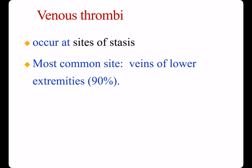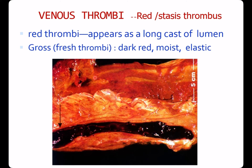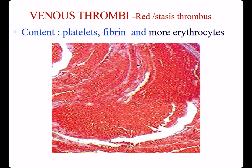Venous thrombus occurs at sites of stasis. Most occur in veins of the lower extremities — nearly 90%. This is a red thrombus. The thrombus is occlusive and appears as a long cast of the vein lumen. On cross section, it is dark red, moist, and elastic. Under microscope, the main component of the red venous thrombus is erythrocytes, though it also includes some platelets and fibrin.